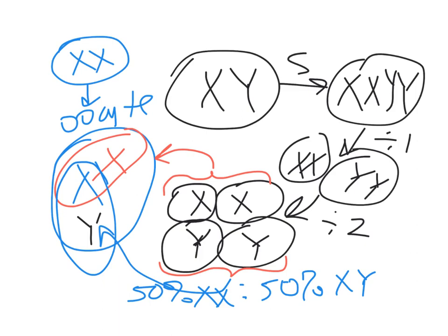Does anybody know a famous organism that does environmental sex determination? A movie was made about it — a cartoon, from over a decade ago, about a little fish named Nemo. Clownfish, like many fish, use environmental sex determination, but clownfish specifically use what's called social sex determination.